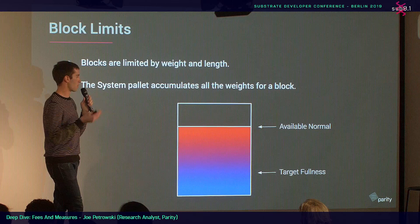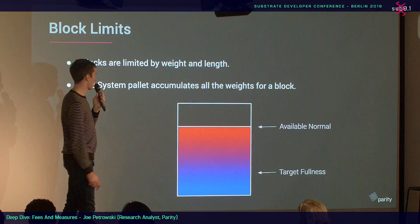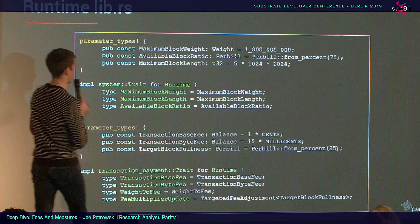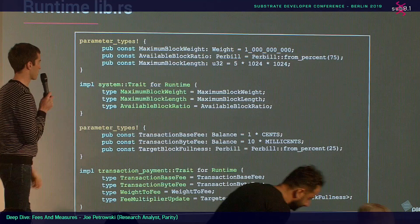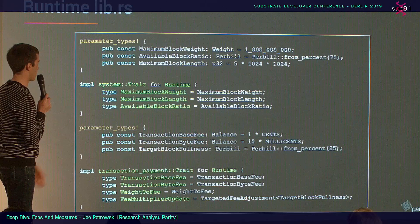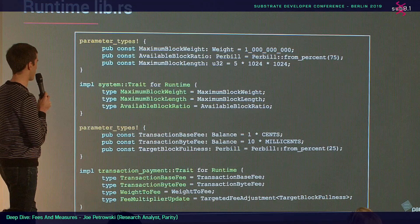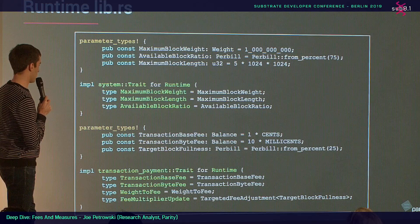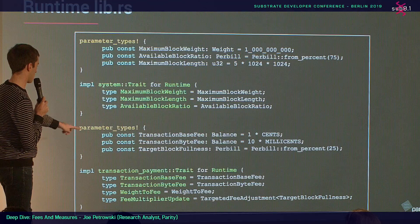In your runtime lib.rs, it's pretty simple. You set maximum block weight, available block ratio — 75% available for normal dispatches — and maximum block length, which in the Kusama runtime is five megabytes. Those go into the system module. Then transaction base fee, byte fee, target block fullness at 25%, 10 milliseconds per byte, plus fee multiplier update and weight-to-fee configuration all go into your runtime parameters.